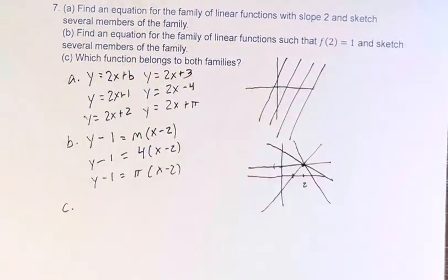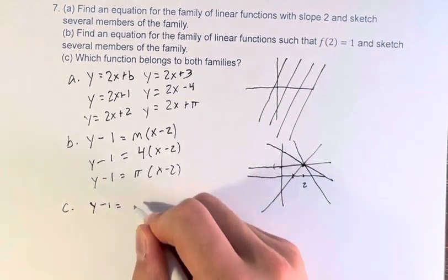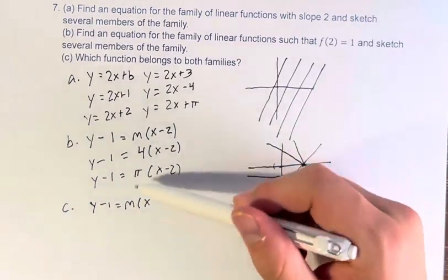Which function belongs to both families? Well, if we look at our function here, y minus 1 is equal to m times x minus 2. How do we make it so this also has slope 2?